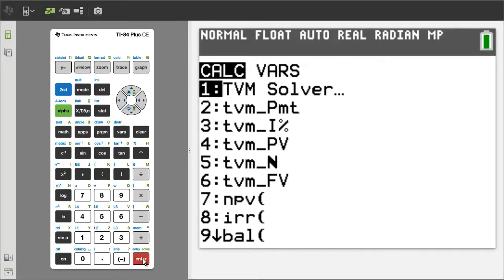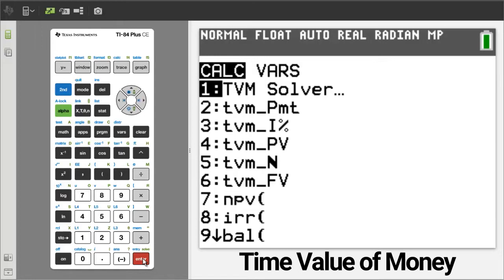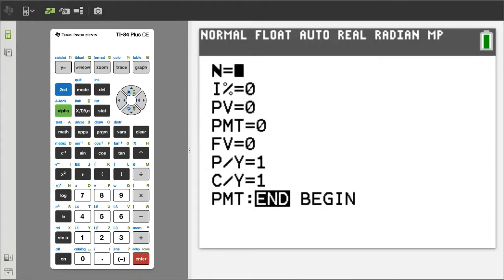This screen pops up. We want number 1, TVM Solver. TVM stands for Time Value of Money. Number 1 is already highlighted. Let's press the enter button. This screen pops up.